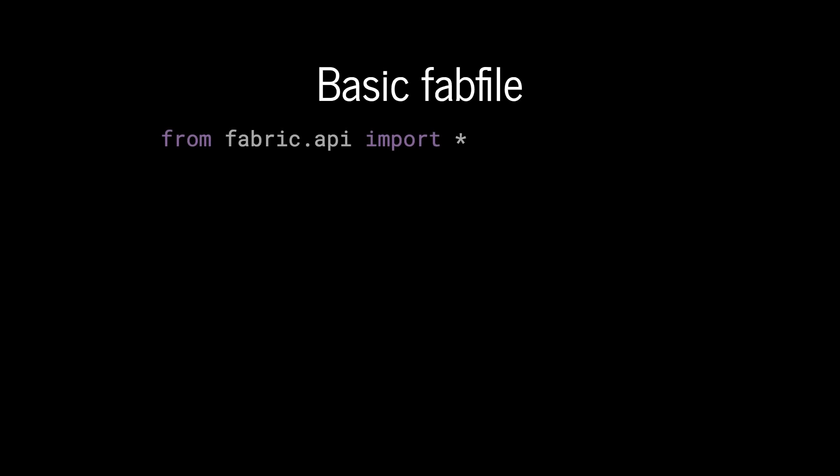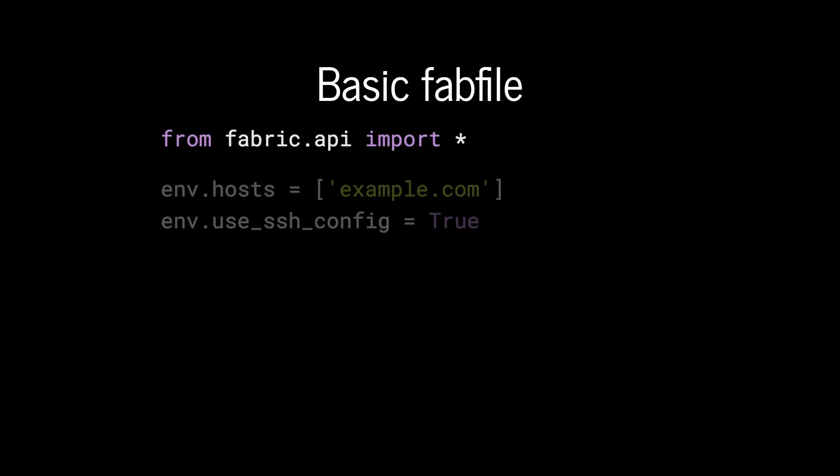Once it's installed, you can start building a fab file. We start by importing at the top — similar to PHP statements, we use 'from fabric.api'. You can then run import, either wildcard it to import everything or name packages specifically. We can then start building our environment by defining one or more hosts to apply to. Most times I use the SSH config file, so if I have SSH keys or usernames stored in my local SSH config, those will get used by Fabric.